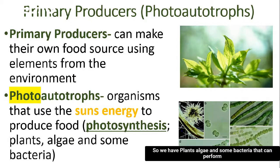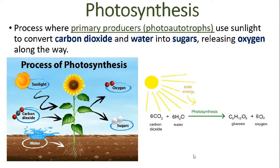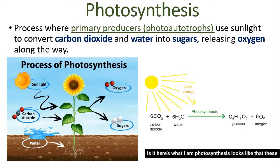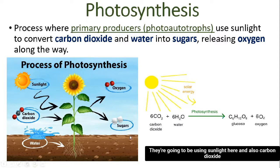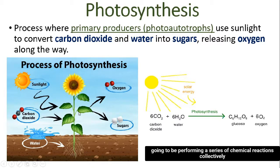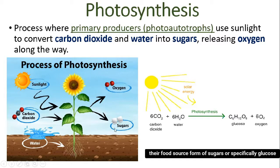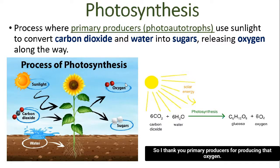Plants, algae, and some bacteria can perform photosynthesis. Here's what that looks like: photo-autotrophs use sunlight, carbon dioxide from the atmosphere, and water from the ground. They perform a series of chemical reactions — collectively called photosynthesis — producing their food source in the form of sugars, more specifically glucose, and also releasing oxygen as a waste product. That's the oxygen we breathe in, so thank you, primary producers, for producing that oxygen.